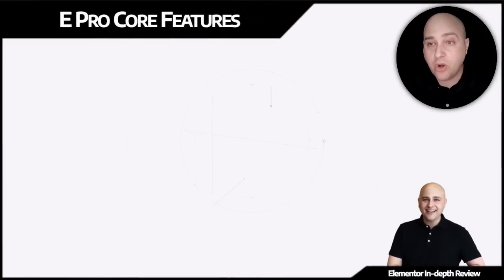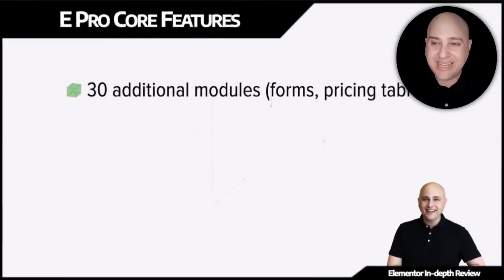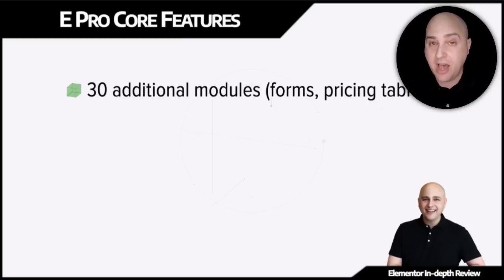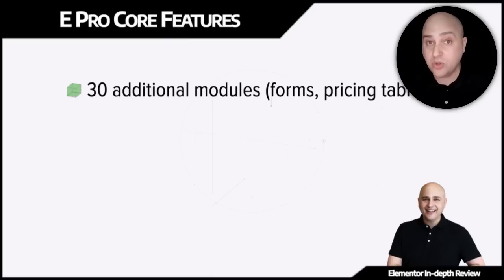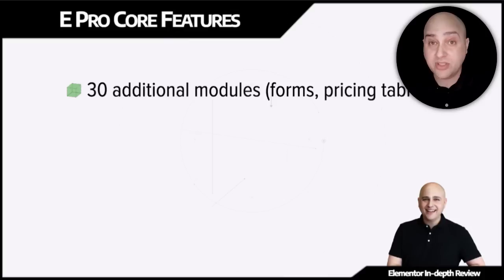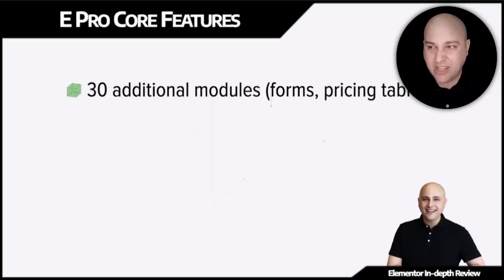Now let's get into Elementor Pro's core features. With Elementor Pro you get 30 additional modules — that's on top of the 23 in the free version. Some of these are modules you'd normally have to purchase a separate plugin to get. A perfect example is the forms module — you can make beautiful opt-in forms with it. Other favorite modules of mine are the pricing tables, which are pretty amazing, and the grid module for displaying blog posts in a grid layout.